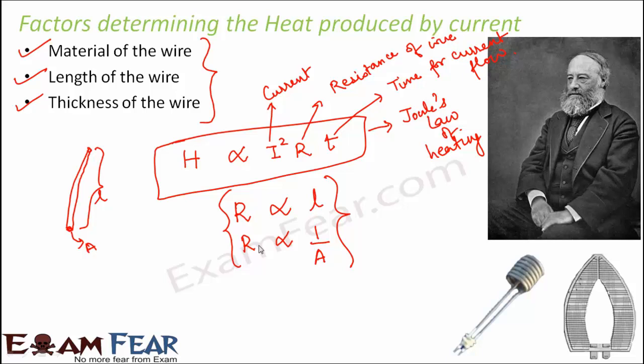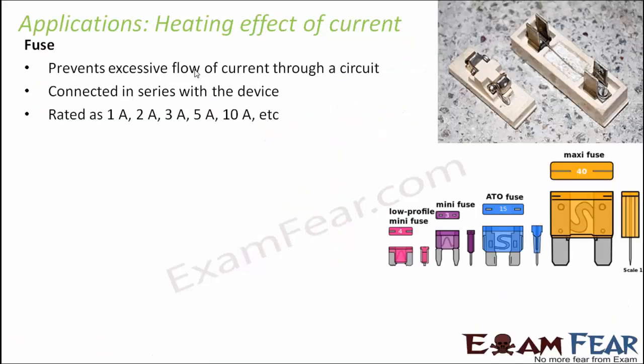When I refer to the wire here, it can refer to the heating element of any appliance — that heating element could be a wire or something else. How much heat will be produced by a specific amount of current is determined by the properties of the heating element. Now let us look at some important applications of the heating effects of current. One such important and useful application is the fuse.